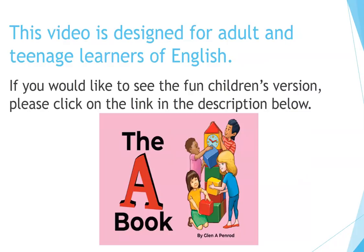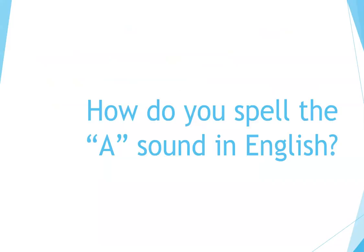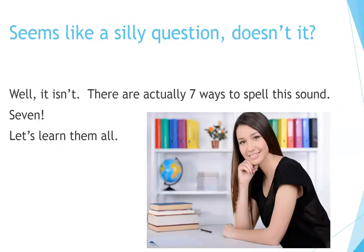This video is designed for adult and teenage learners of English. If you would like to see the fun children's version, please click on the link in the description below. How do you spell the A sound in English? Seems like a silly question, doesn't it? Well, it isn't. There are actually seven ways to spell this sound. Seven. Let's learn them all.